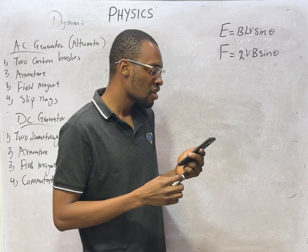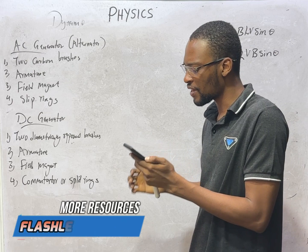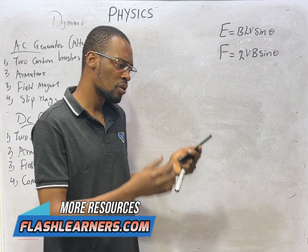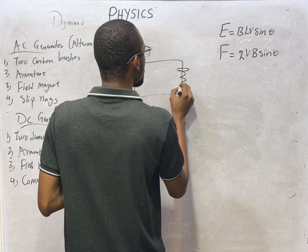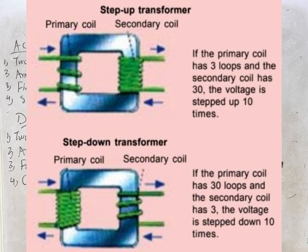Eddy losses due to eddy current can be reduced by a dash. Transformers are devices that step up or step down voltage at constant frequency. Transformers specifically have number of turns in the primary and number of turns in the secondary. And transformers only work with AC. They do not work with DC.